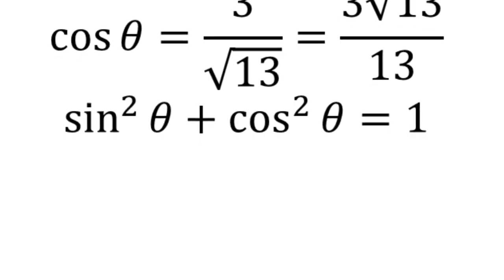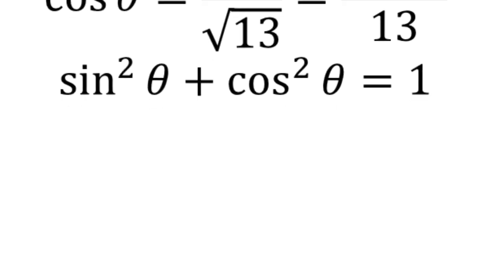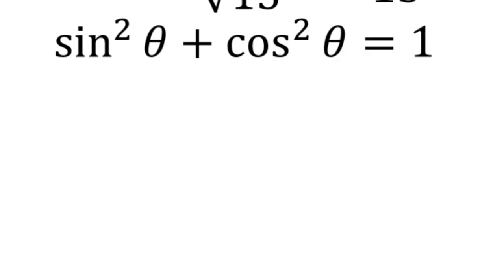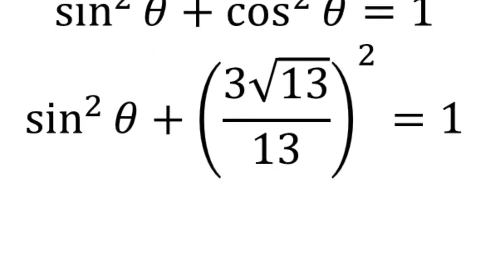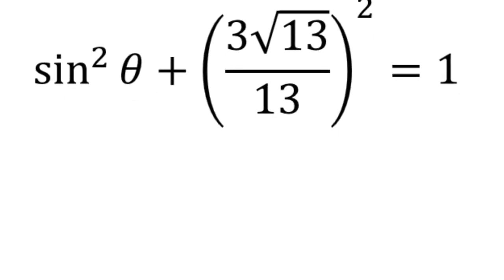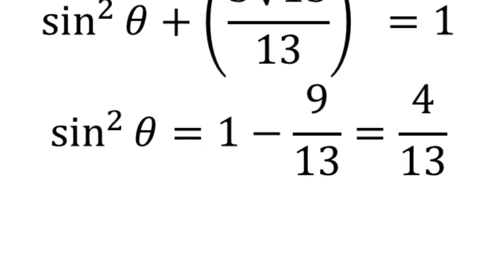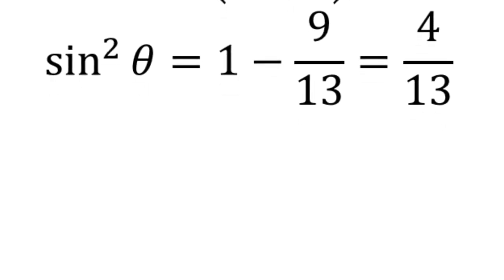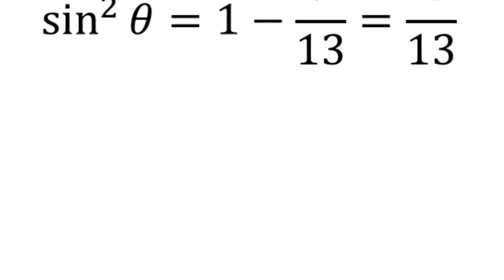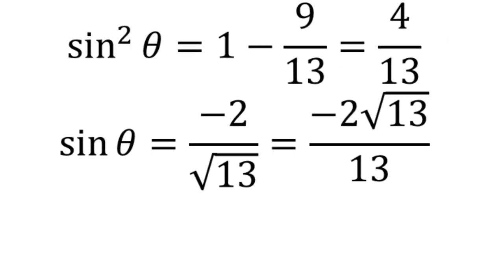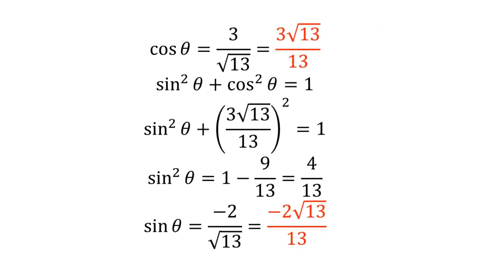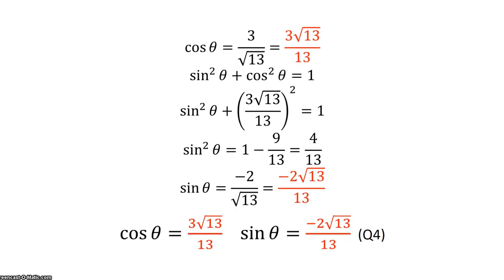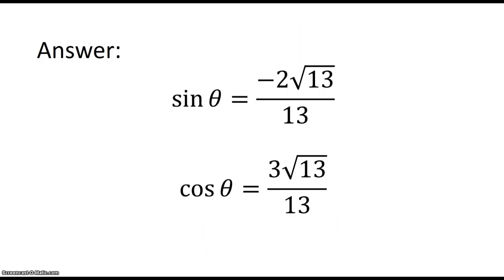We have cosθ = 3/√13, or 3√13/13. Plugging that into the Pythagorean identity by squaring it gives 9/13. Taking that away from 1 gives 4/13, and taking the square root gives sinθ = 2/√13, or 2√13/13. The answers are summarized: cosθ is 3√13/13, and sinθ is negative 2√13/13 because we're in quadrant 4.